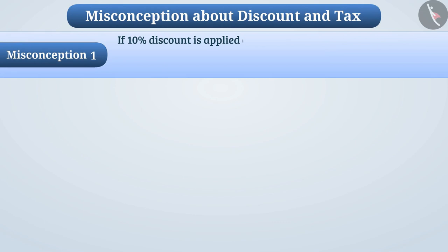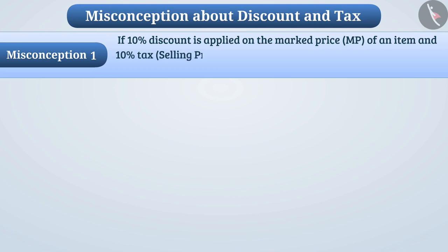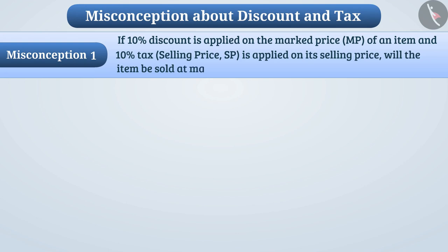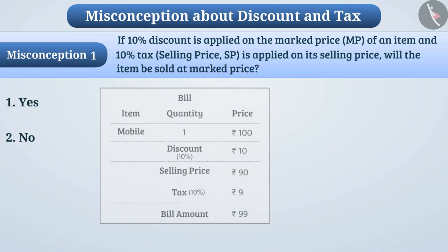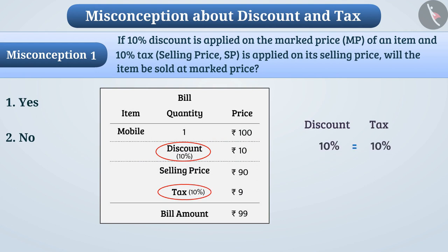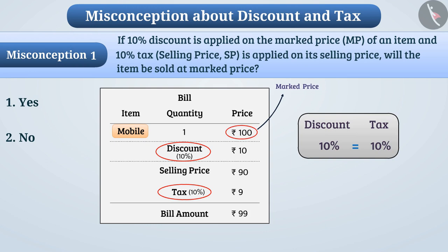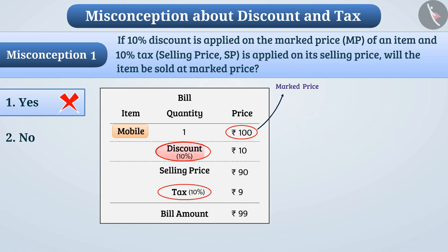Misconception 1: If a 10% discount is applied on the marked price of an item and 10% tax is applied on its selling price, will the item be sold at the marked price? Some children see that the discount and tax rates are similar and think the item will be sold at the marked price. They do not logically try to understand it and choose option 1 in a hurry, which is the wrong answer. Remember that discount is applied on the marked price and sales tax is levied on the selling price of the article.